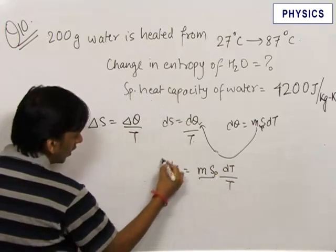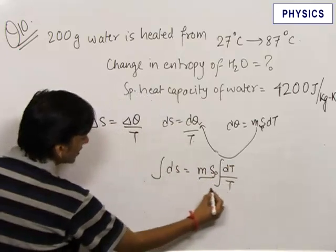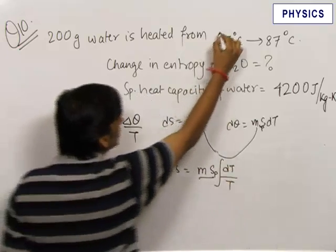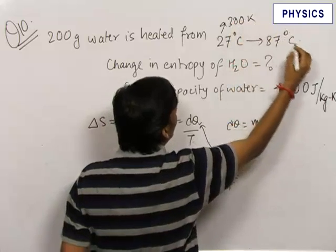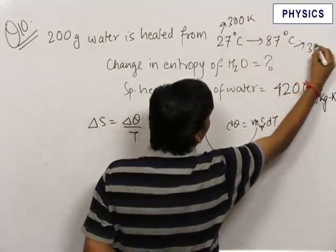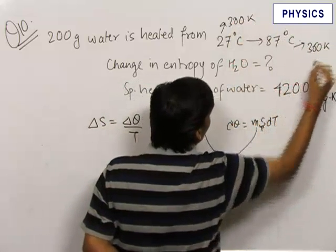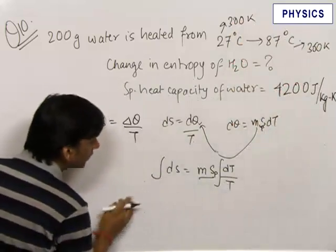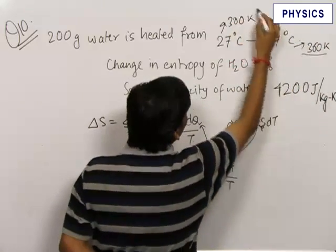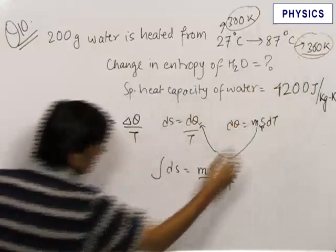We integrate this from initial state to final state. The initial temperature is equal to 300 kelvin and the final is equal to 360 kelvin. Always be aware of this thing, be careful of this thing. You always have to write the temperature in kelvin.